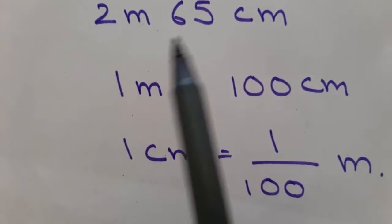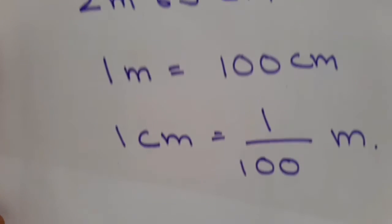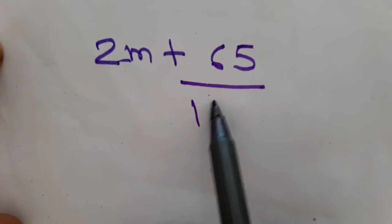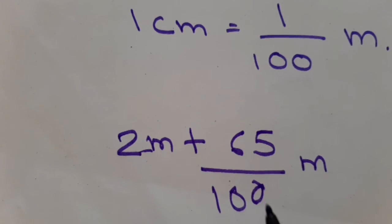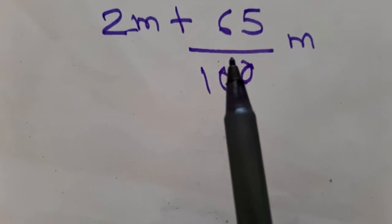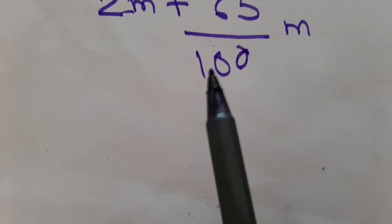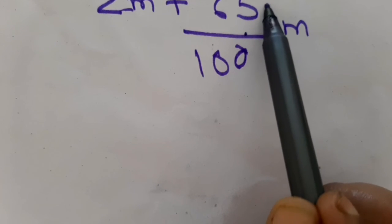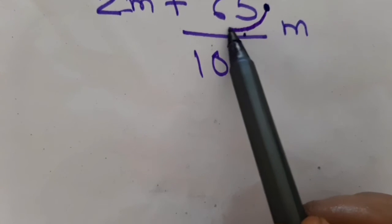You will not change the 2 meters — keep it as is. You will just convert the 65 centimeters to meters. So you write 2 meters plus 65 centimeters, and 65 centimeters becomes 65/100 meters. To divide 65 by 100, count the number of zeros — here there are 2 zeros, so you leave the last 2 digits and shift the decimal 2 places to the left. When arranging in columns, decimal should come under decimal.